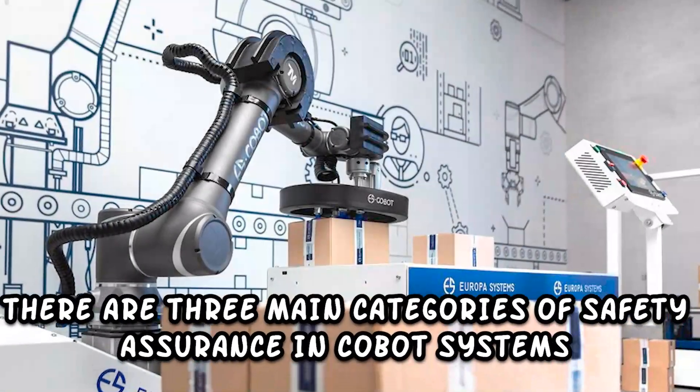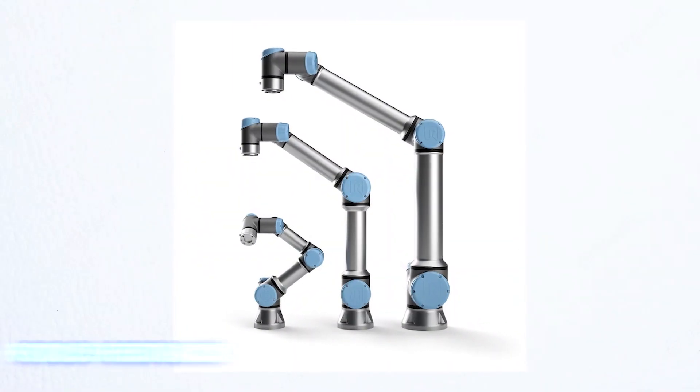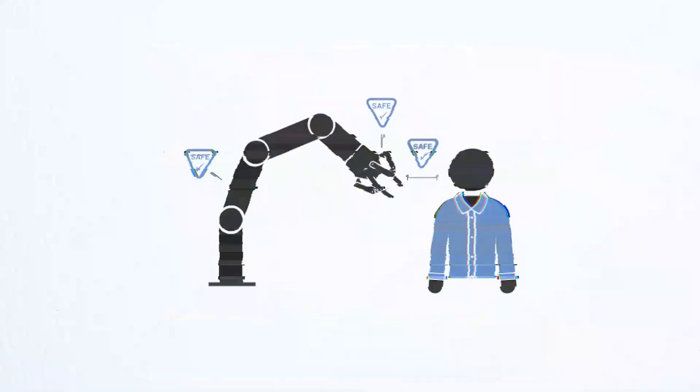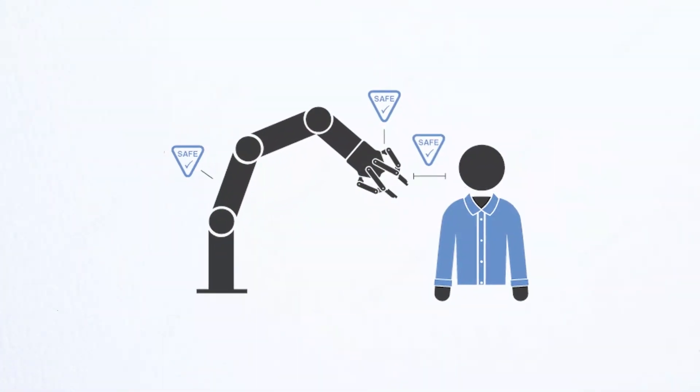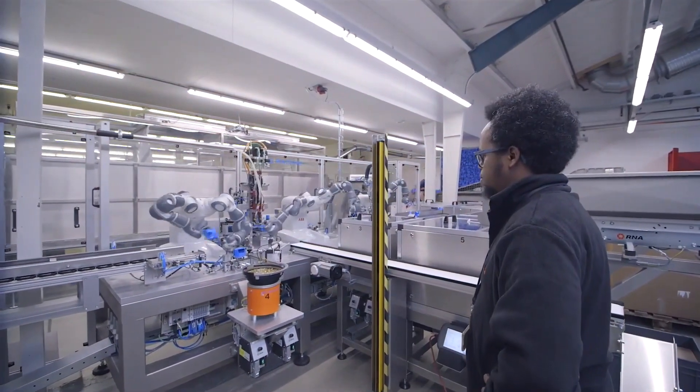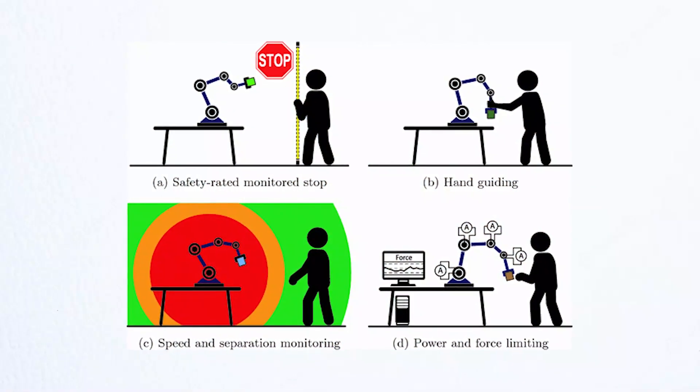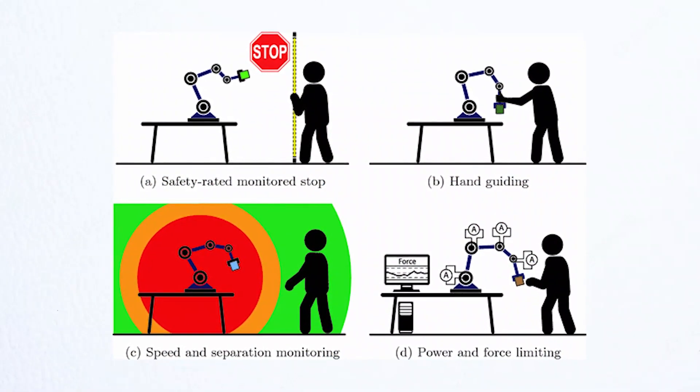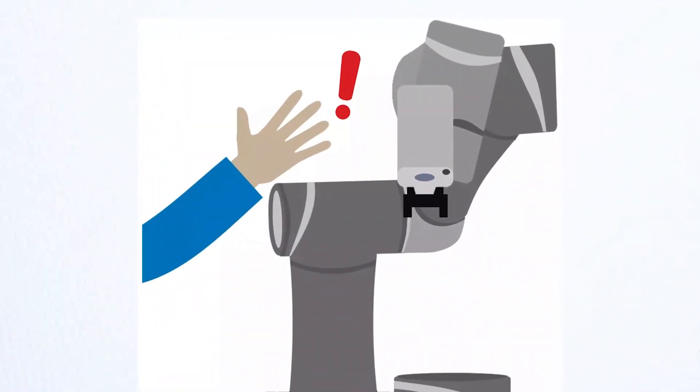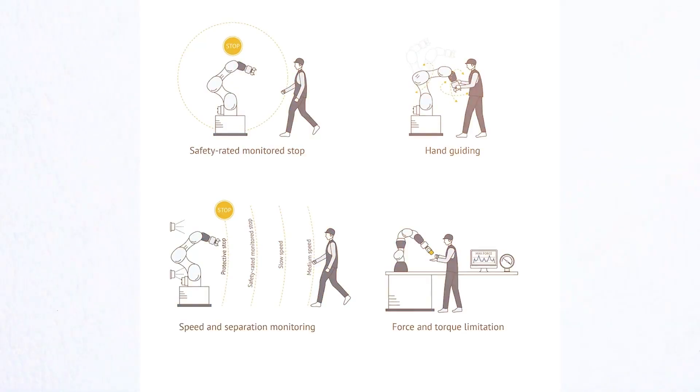There are three main categories of safety assurance in cobot systems: speed limits, force feedback, and external sensing. ISO TS15066 first introduced in 2006 ensures that all machines classified as cobots require at least one safety feature such as a safety-rated monitoring stop, hand guidance, speed and separation monitoring, or power and limitation of power.